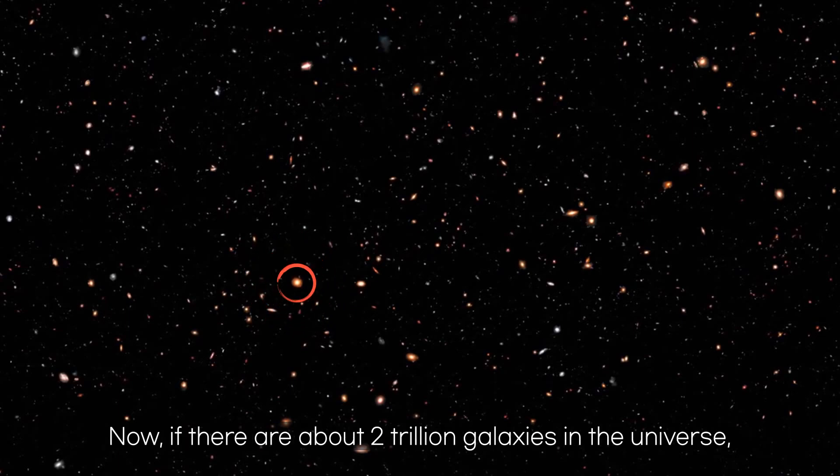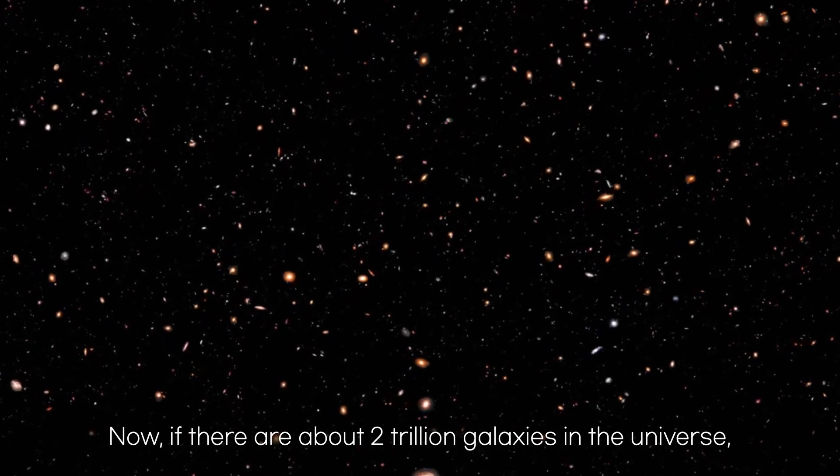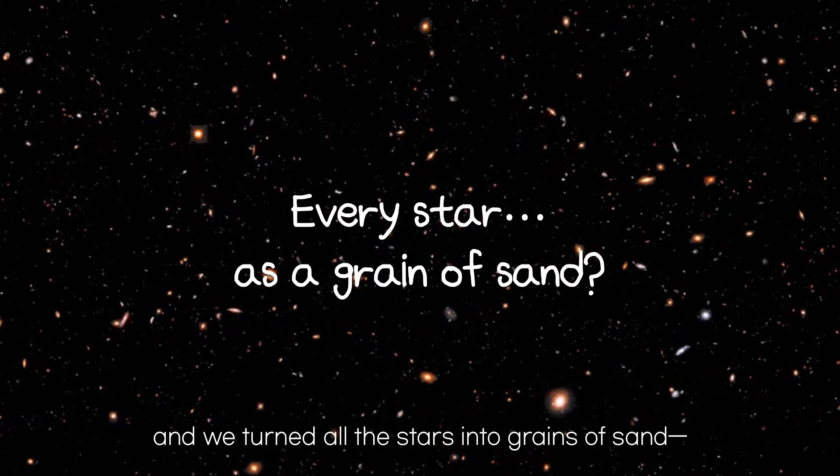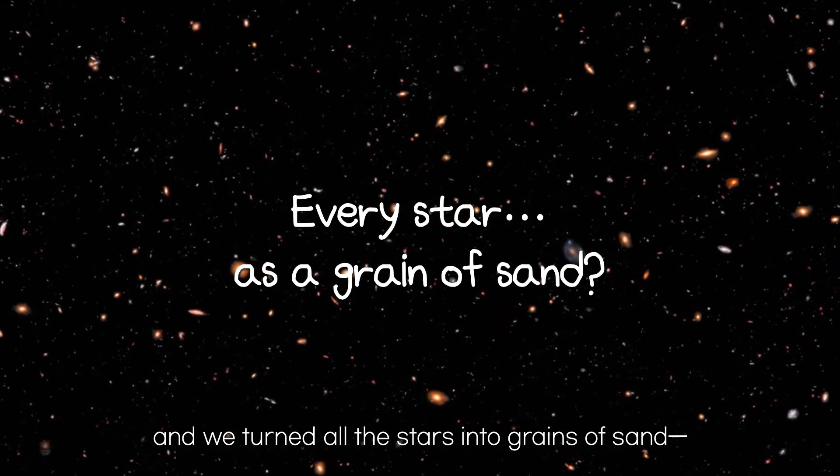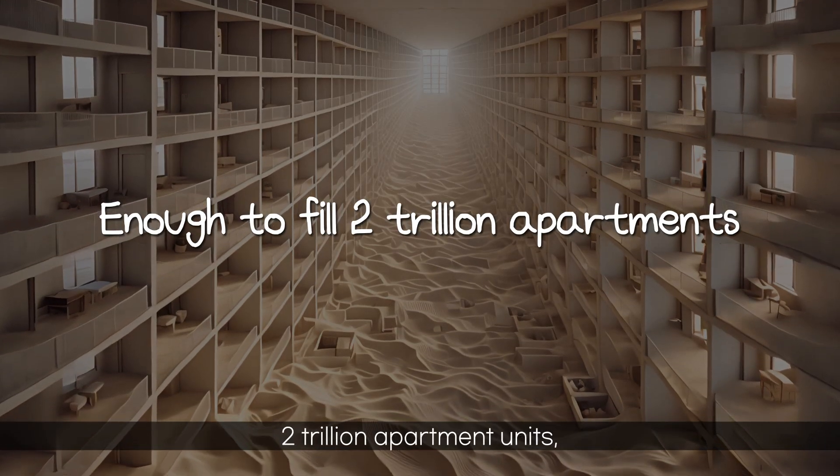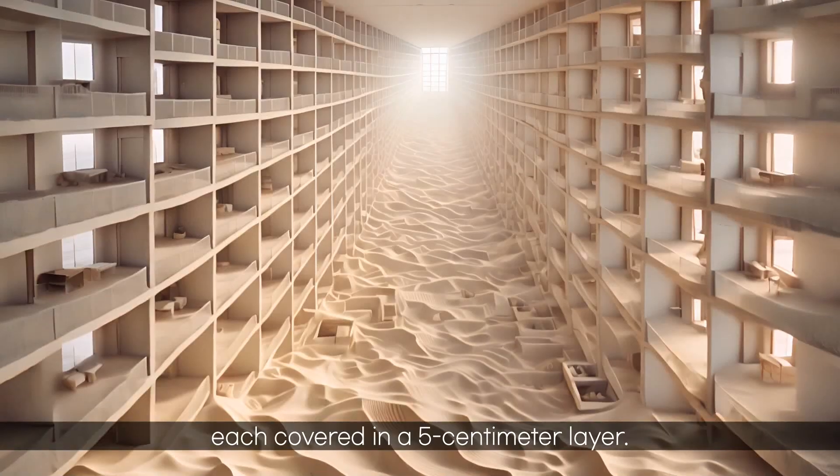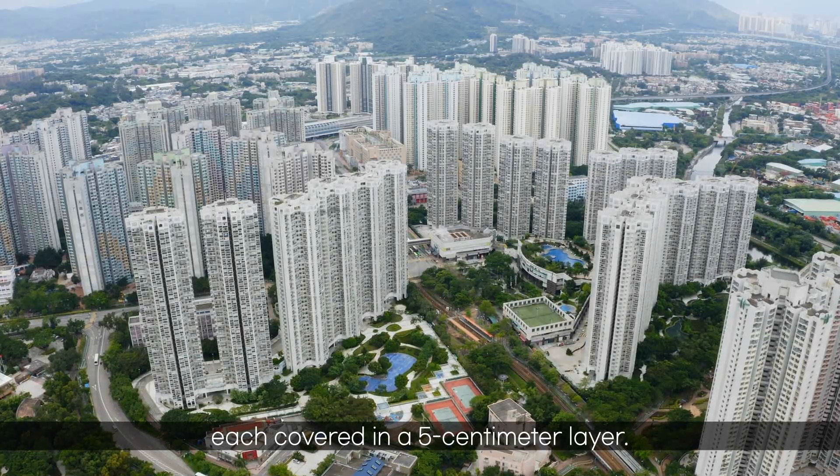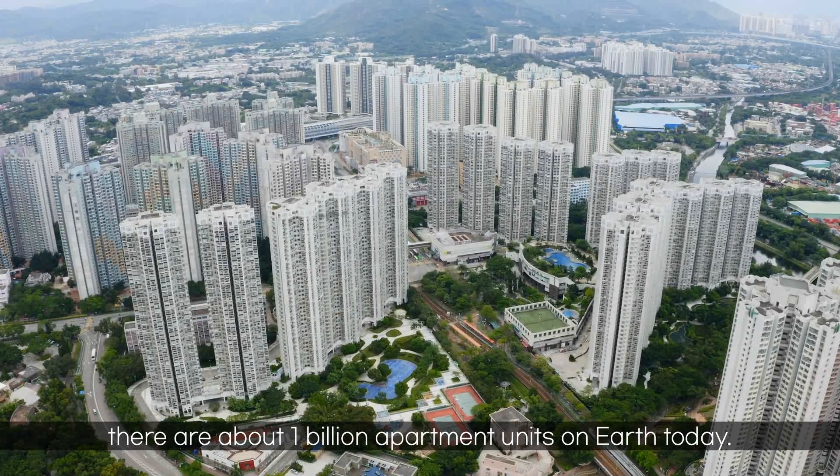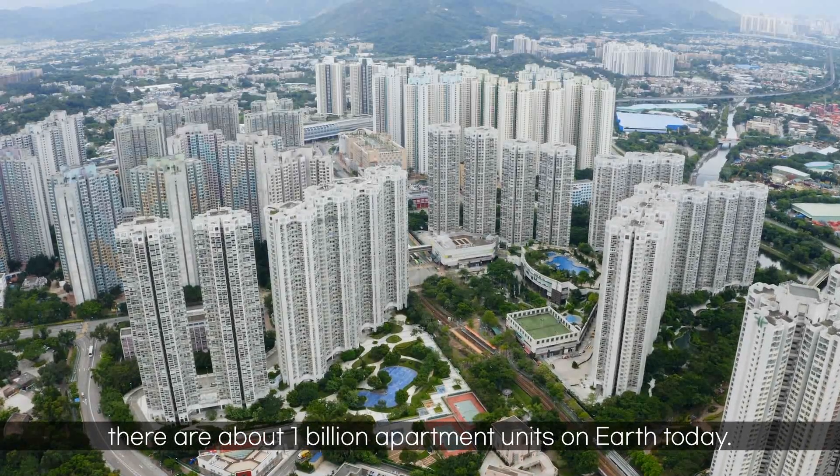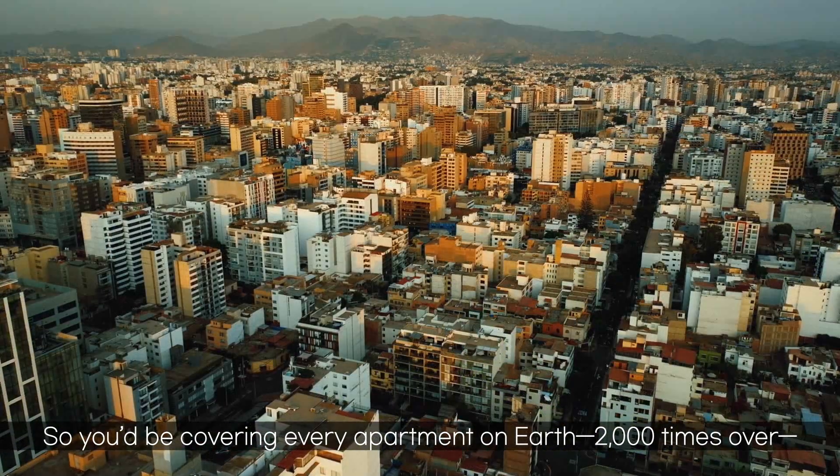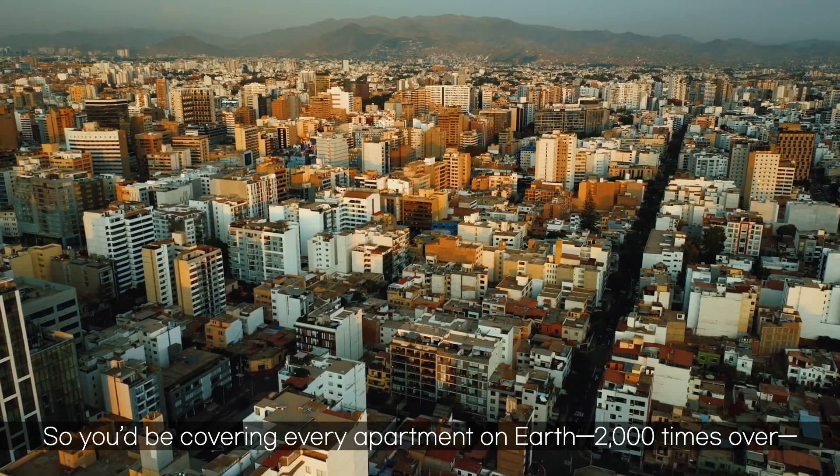Now, if there are about 2 trillion galaxies in the universe, and we turned all the stars into grains of sand, you'd need enough sand to fill the floor space of 2 trillion apartment units, each covered in a 5 centimeter layer. For perspective, there are about 1 billion apartment units on Earth today. So you'd be covering every apartment on Earth 2,000 times over, just to match the number of stars in the observable universe.